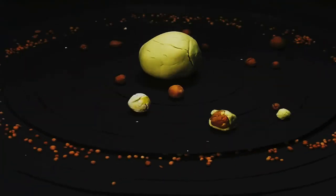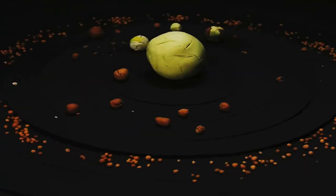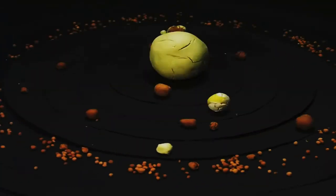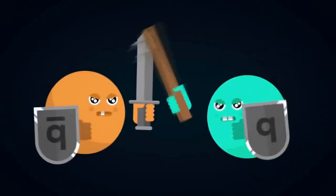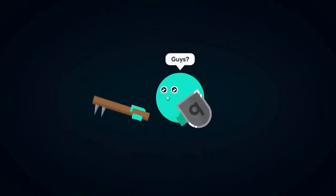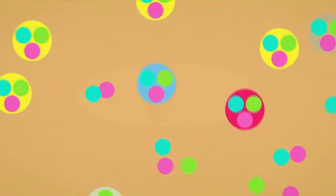As the universe expanded and cooled, energy changed into particles of matter and antimatter. These two particles largely destroyed each other, but some matter survived. The stable particles called protons and neutrons started to form when the universe was one second old.